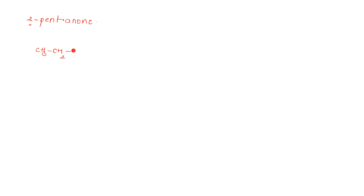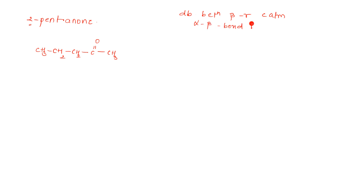For 2-pentanone: always remember the hint. There is a double bond between beta and gamma carbon atoms, and the alpha-beta bond breaks. First identify alpha, beta, gamma. Gamma hydrogen abstraction: this gamma H is going to go to O. What is left at gamma? CH2. And there is a double bond formed between beta and gamma. This is your beta and gamma, so you form that double bond.